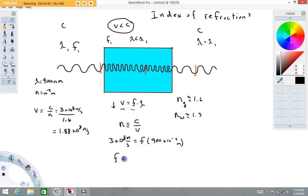900 times 10 to the minus ninth meters. So the frequency is going to equal, if you give me a moment here. Okay, so what I get here is 3.3 times 10 to the 14th hertz. So this is the frequency of the incoming light when it gets to here.